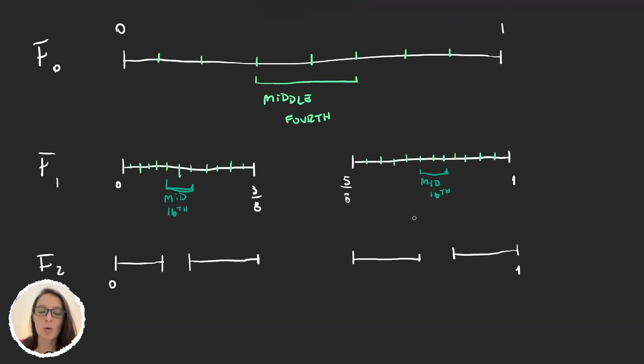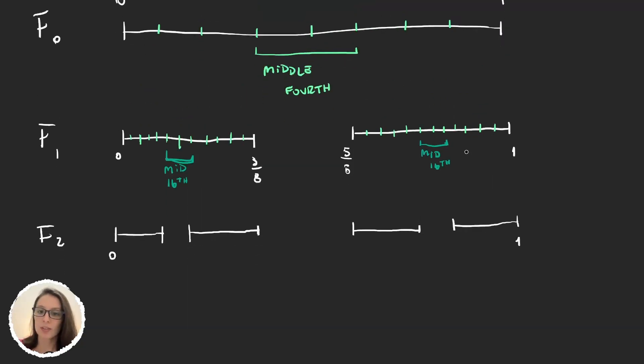Let's calculate how much we removed. On this first step, we removed one interval of size 1/4. On the second step, we removed two intervals of length 1/16.